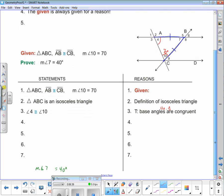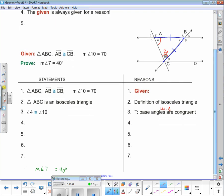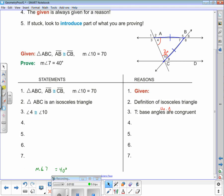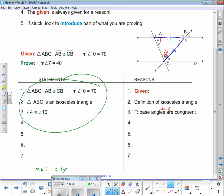So my given has gotten me there. Now, what am I after? Where am I heading? I'm heading to the measure of angle 7 equals 40. All I've got right now is that 10 is 70, and I've got to get to 7 being 40. I might not know where to go now. So that brings the fifth tip. Tip number five: if stuck, look to introduce part of what you are proving.